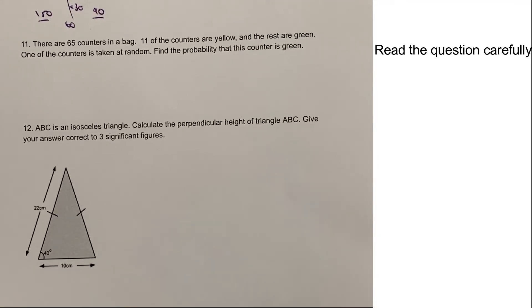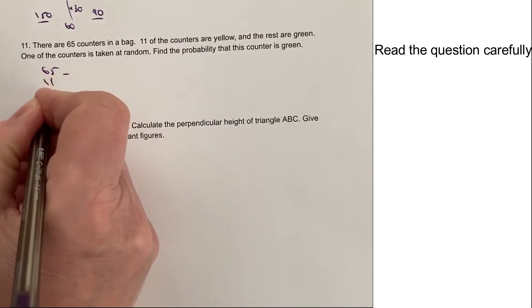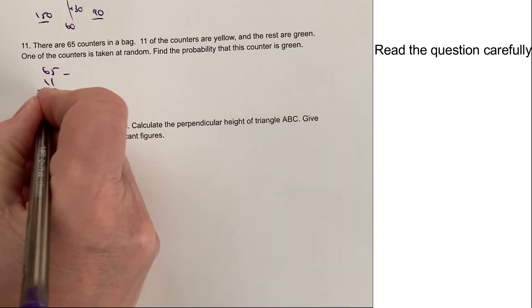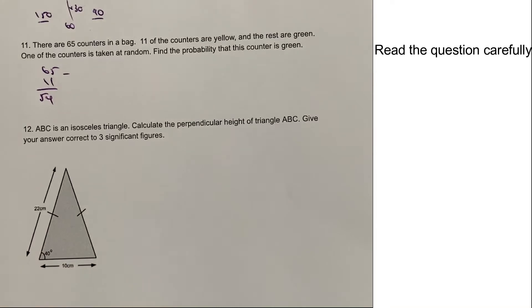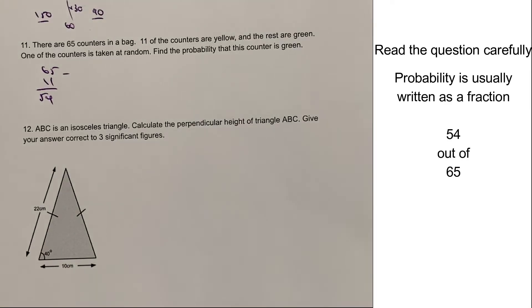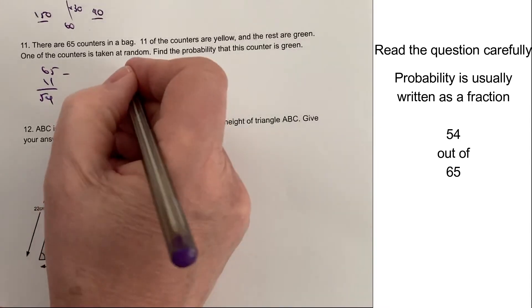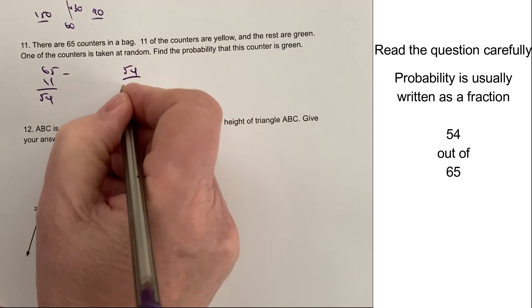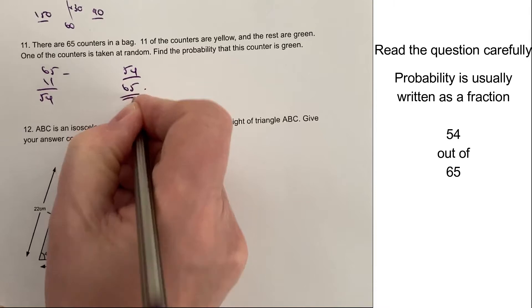There are 65 counters in a bag. 11 of the counters are yellow. The rest are green. One of the counters is taken at random. Let's find out how many are green. So basically, we're saying that 65 take away 11 will give the amount of green counters, which is 54. So the probability that the counter is green, if you take it out of the bag, is going to be 54 out of the total amount of counters, which is 65. That's the answer to that question. Very, very straightforward, that one.